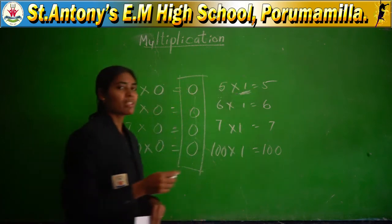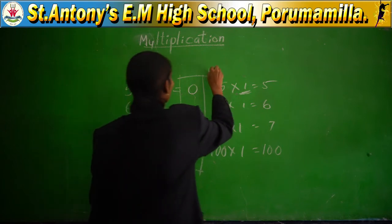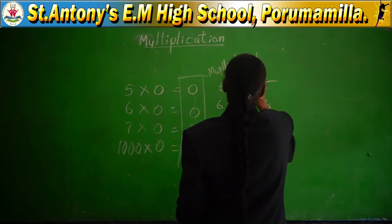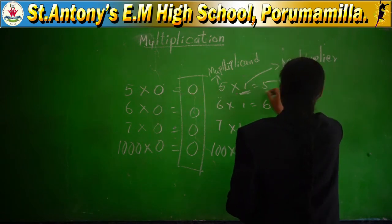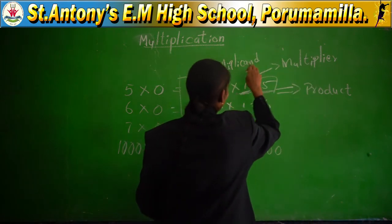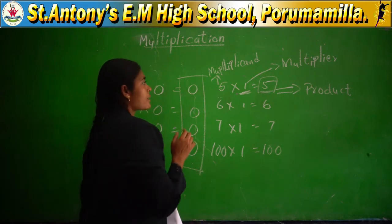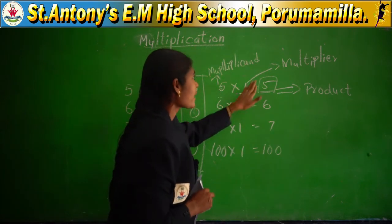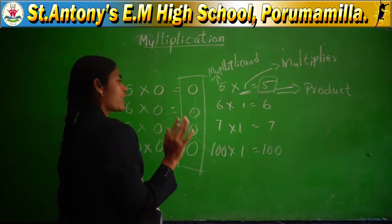In multiplication you first have to know which is the multiplicand, which is the multiplier, and which is the product. The first number is called the multiplicand. The second number — the one you are multiplying with — is called the multiplier. The final answer is called the product. So the number being multiplied is the multiplicand, the number you multiply by is the multiplier, and the answer is the product.